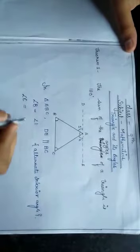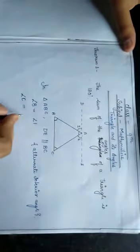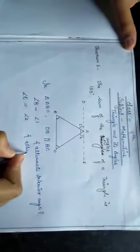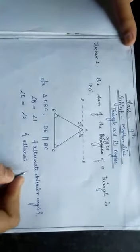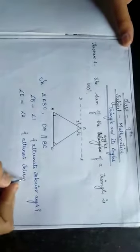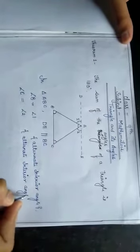Similarly, angle C is equal to angle 2. This is also an alternate interior angle.